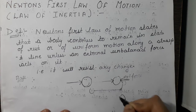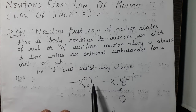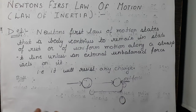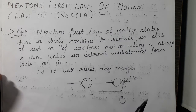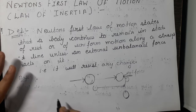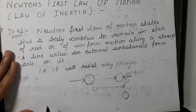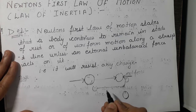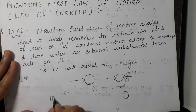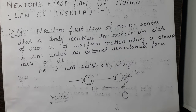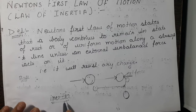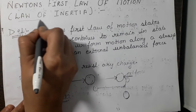So here we can say that this ball is resisting any change. From this we can conclude that every body possesses a property by virtue of which it resists any change in its state of rest or of uniform motion. This property is called inertia, and that is why we also call this law the law of inertia.